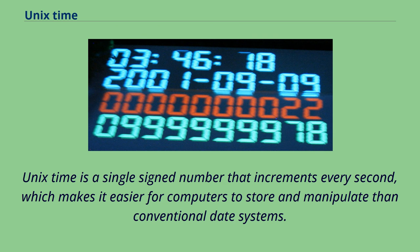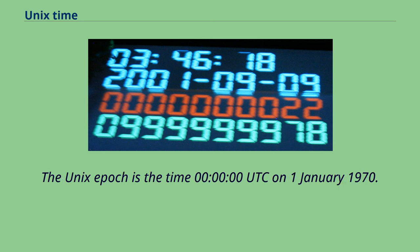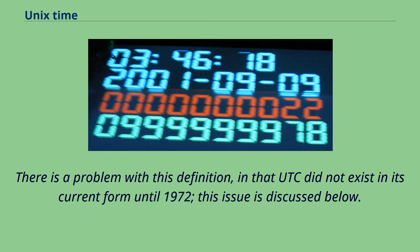Unix time is a single signed number that increments every second, which makes it easier for computers to store and manipulate than conventional date systems. Interpreter programs can then convert it to a human-readable format. The Unix epoch is 00:00:00 UTC on January 1, 1970. There is a problem with this definition, in that UTC did not exist in its current form until 1972.